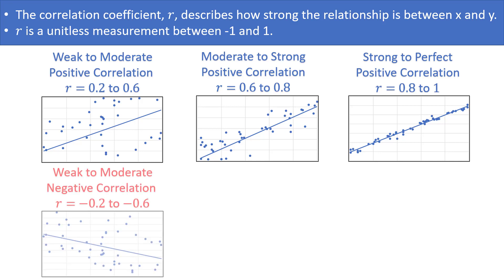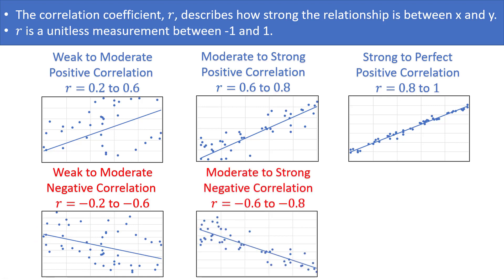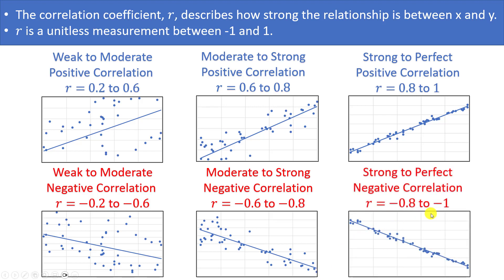We can also apply the same idea to negative correlations. If r is between −0.2 and −0.6, we have a weak to moderate negative correlation with a downward sloping line that doesn't fit well. Between −0.6 and −0.8 gives a moderate to strong negative correlation, and between −0.8 and −1 gives a strong to perfect negative correlation. At the extreme of −1, every dot fits right on the downward sloping line.